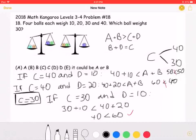If C is 40 and D is 10, because we want to choose the smallest possible values of D because C plus D must be less than A plus B, we would get that A plus B would be greater than 40 plus 10. 40 being C and 10 being D.